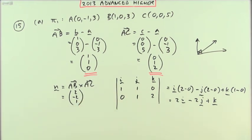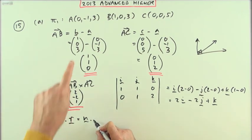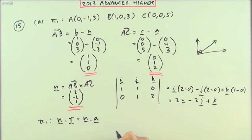Then the last part: what's the equation of this plane π₁? Well, the normal vector—the scalar product of that with the position vector of any point in the plane will equal that normal vector times the position vector of any of these given points. They all lie in the plane, so I can use any of them. I'll use A.